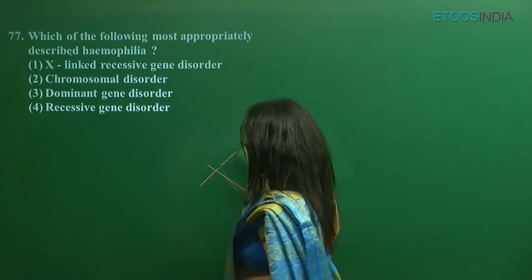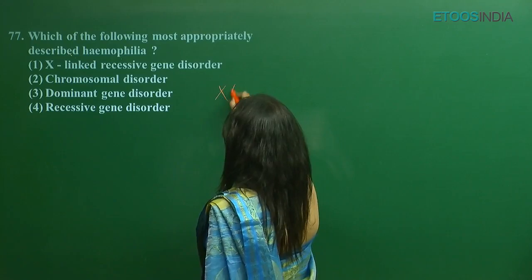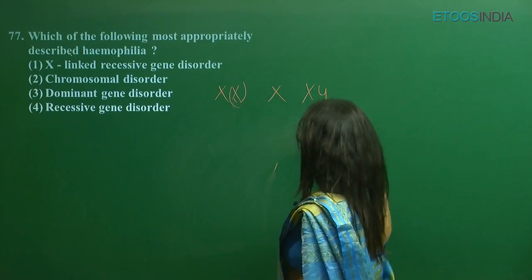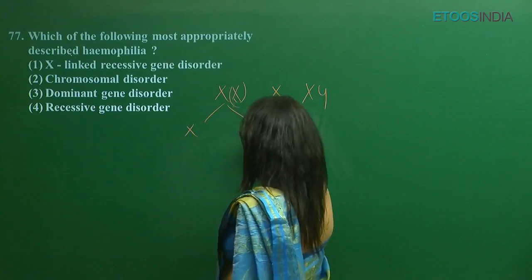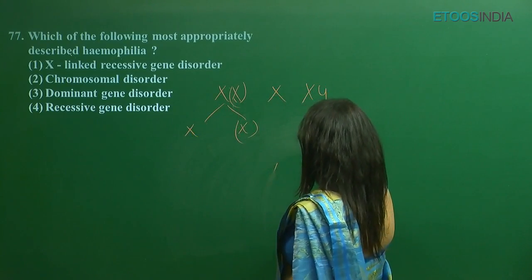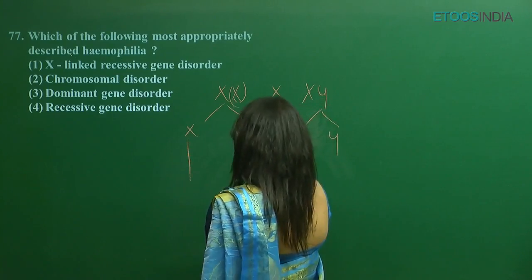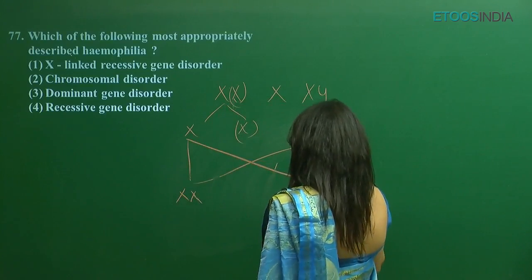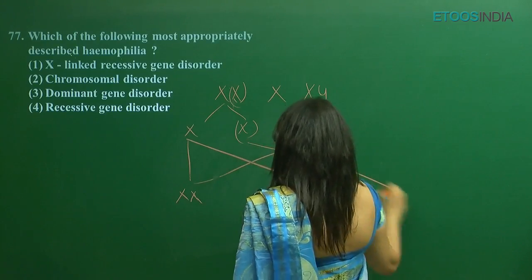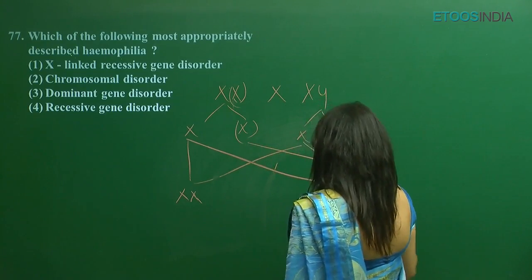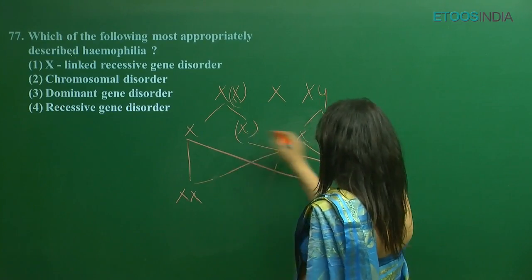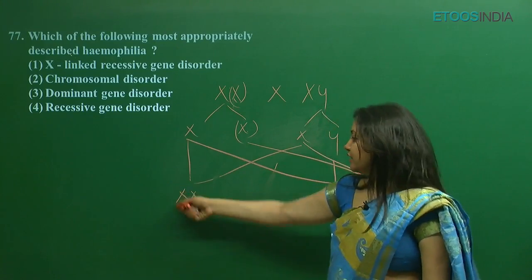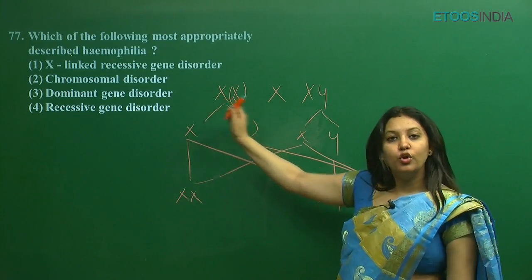Let me show you like this — what is X-linked recessive? You have a carrier female. You cross her with a normal male. This is the normal male, this is the carrier female, and from this cross a diseased male is produced. If X-linked, then only a female would show the disease.